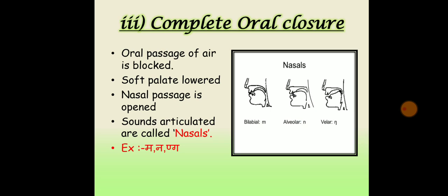The next stricture is complete oral closure. The active and passive articulators are in firm contact with each other, stopping the oral passage of air completely. However, the soft palate is lowered so that the nasal passage of air is opened. The lung air escapes through the nostrils freely, and sounds articulated with this stricture are called nasals. For example, the final sounds in the English words sum, sun, and sung are nasal sounds.